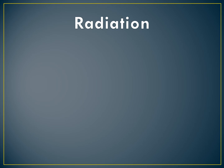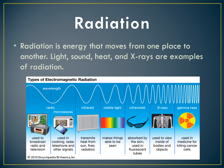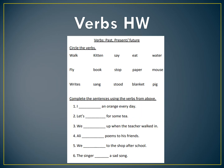The next word is radiation — this one's a little bit confusing but let's get through it. Radiation is energy that moves from one place to another. Light, sound, heat, and x-rays are examples of radiation. You can see gamma rays, x-rays, ultraviolets, visible light, infrared, microwaves, and radio on the diagram, with wavelength shown on top. You don't really have to know too much detail — just know that radiation comes from the sun.